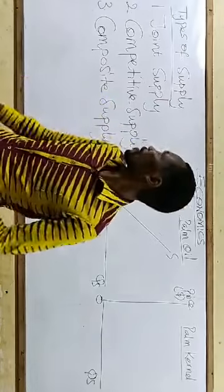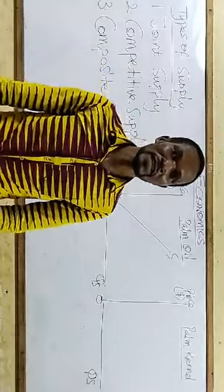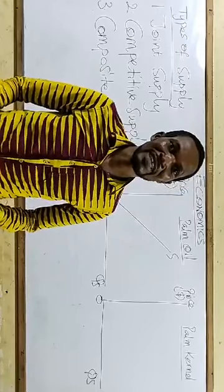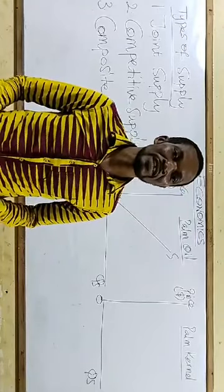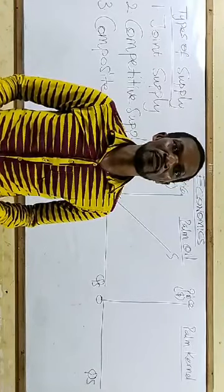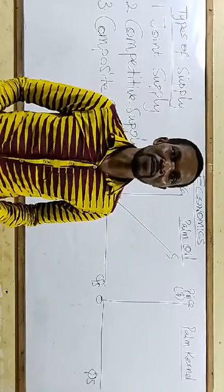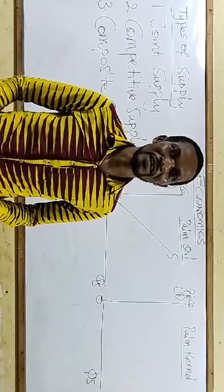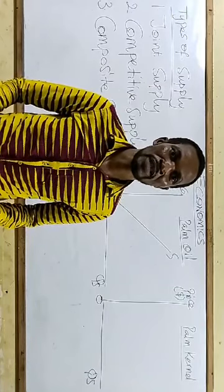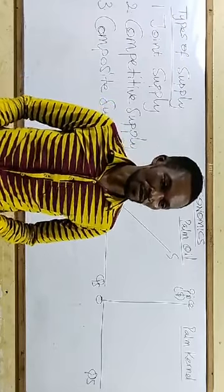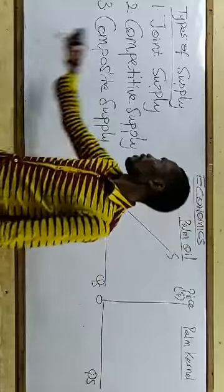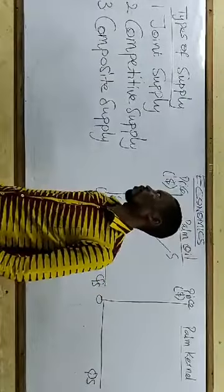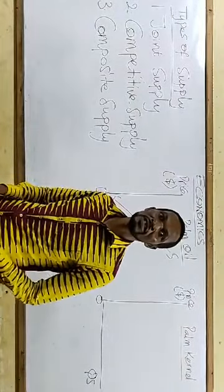Today we are going to look at types of supply. In economics at the SHS level, we are only going to look at three types of supply. You remember demand — we have four types. In supply, we have three to discuss. And it's not that difficult; in a very short moment I will be done with that. So let's look at types of supply. Number one, we have joint supply. Number two, competitive supply. Number three, composite supply. Joint supply can also be called supplementary supply.